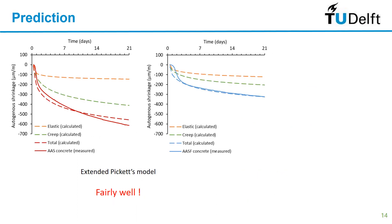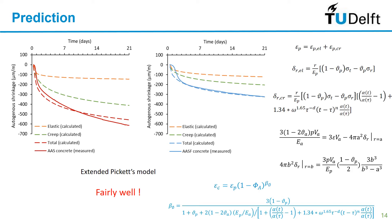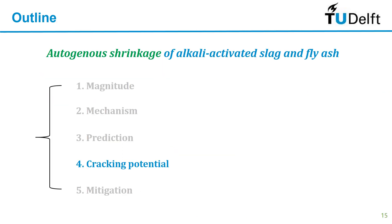Based on this knowledge we developed a new model — we call it the extended Pickett's model — to predict the shrinkage of concrete. I don't have time to go into the details of the equations, but the final expression is of similar shape to Pickett's model, with the creep part taken into account at every step of calculation. We can see that this model can predict really well the autogenous shrinkage of the concrete.